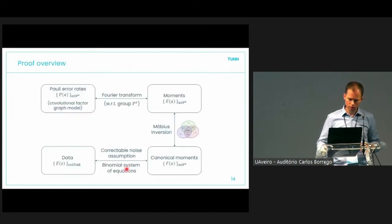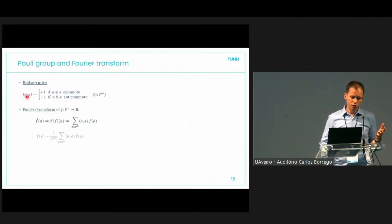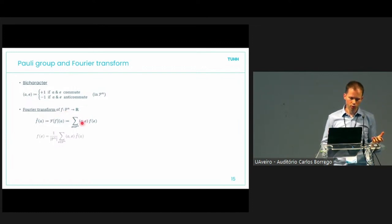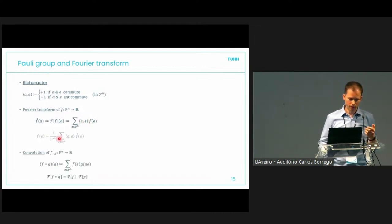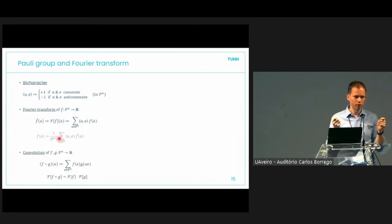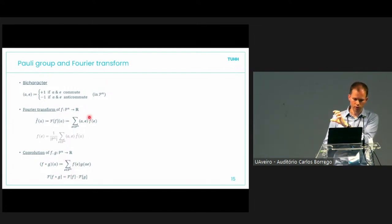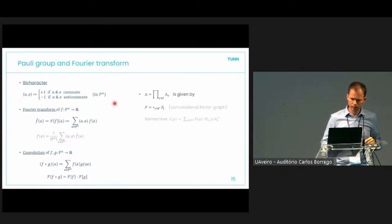We then apply an inclusion-exclusion transform similar to the canonical form of factor graphs, getting canonical moments. They are in one-to-one correspondence with the data under the assumption of correctable noise, requiring us to solve a binomial system of equations, similar to the Toric code example. The starting point is the symplectic inner product — the bicharacter on the effective Pauli group. A probability distribution over error rates can be Fourier transformed using this, and there is a convolution on the Pauli group that maps to products via Fourier transform in the usual way.